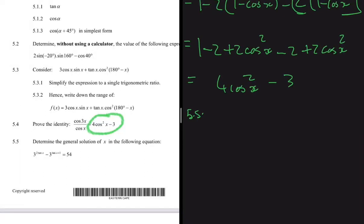Let's determine the general solution of X in the following equation. We have 3^(2tanX) - 3^(tanX+1) = 54.